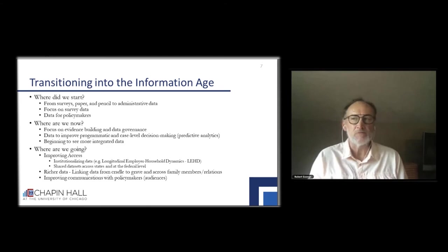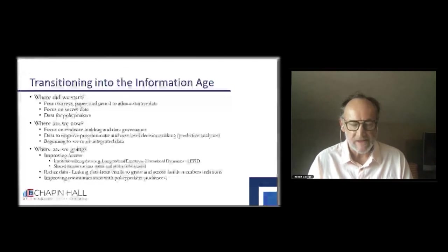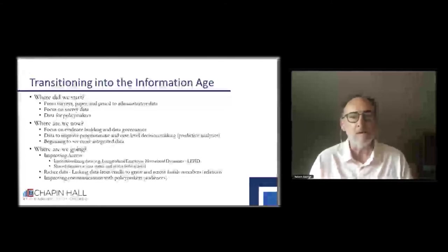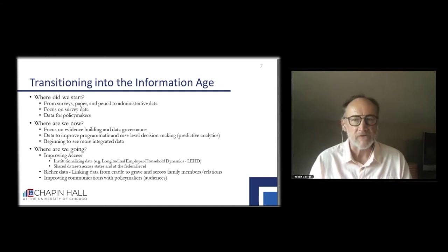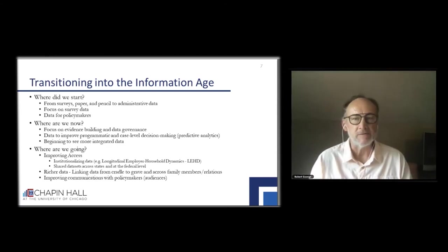We need richer data. We want to link individuals from cradle to grave and link data across family members. Economic mobility is really an issue at the family level, at the household level, for individual members. Families bring resources together to achieve economic mobility. We also have a great opportunity to make the data richer through the use of text. Workers and state agencies right now are collecting case notes on many of the cases they're dealing with, and it's really a resource for many of the issues that we need.